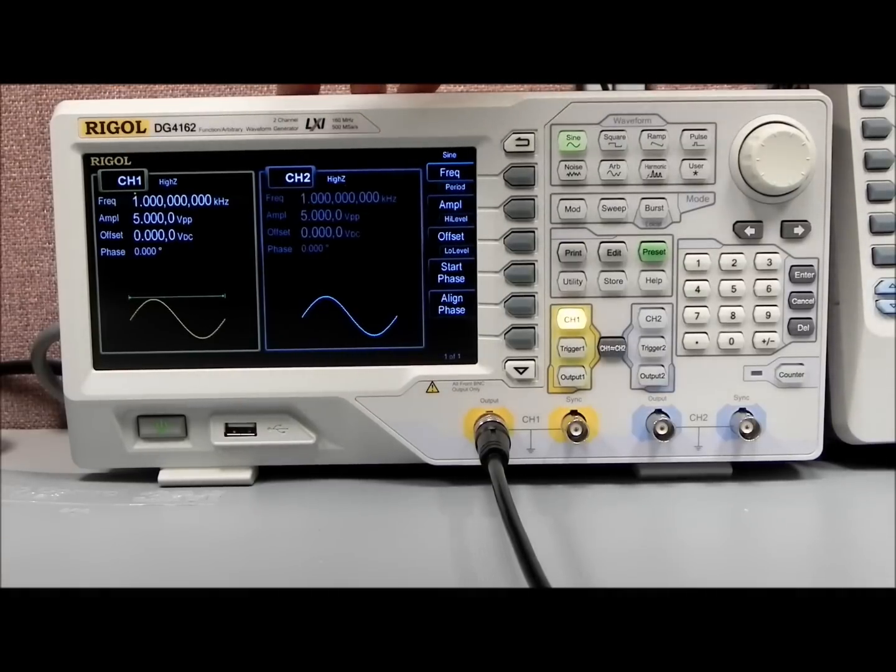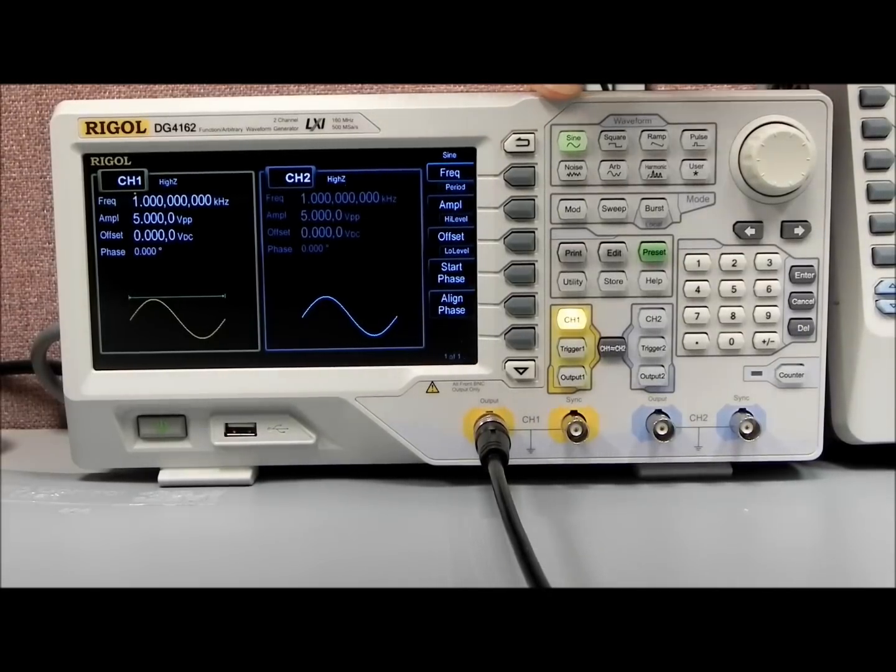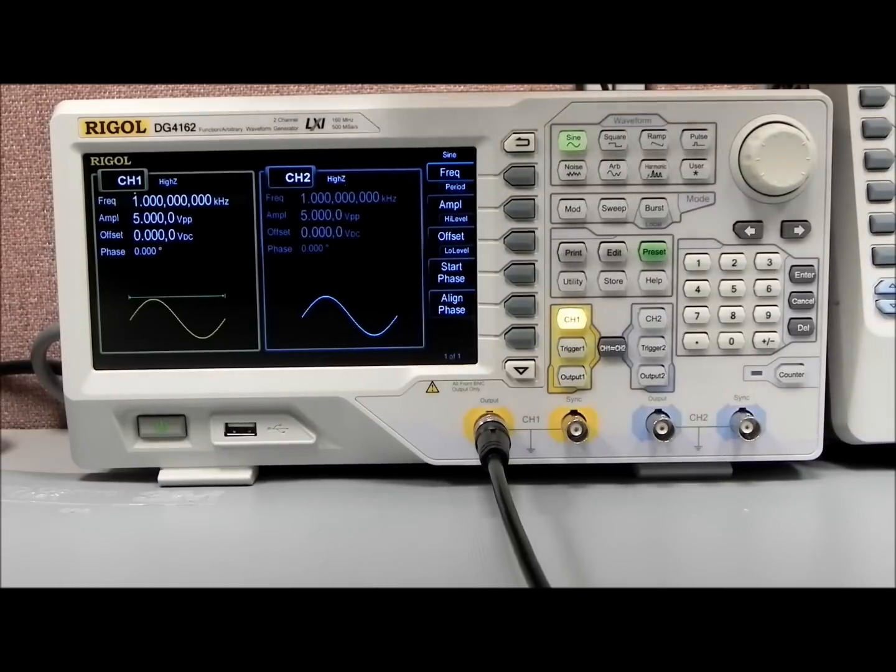You'll see all of the DG4000 models have dual channels. Channel 1, Channel 2 are identical as far as their power output, voltage and current, as well as all of their capabilities. They each have 16,000 point ARB capabilities, as well as all of the features basically match channel to channel.